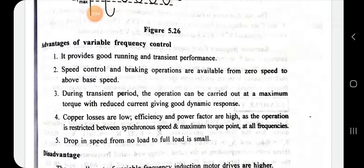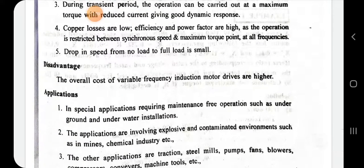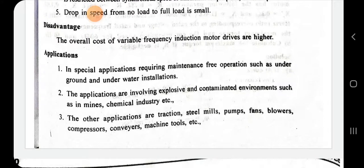Advantages of V/f control: it provides good running and transient response; speed control from zero speed to above rated speed is possible; braking operation is also available; maximum torque with reduced current and good dynamic response; copper losses are low; efficiency and power factor are high; operation is restricted between synchronous speed and maximum torque point; and voltage drop from no-load to full-load speed is very small. The disadvantage is that the cost is very high. Applications include mines, chemical industries, traction, steel mills, pumps, fans, blowers, compressors, conveyors, and machine tools.